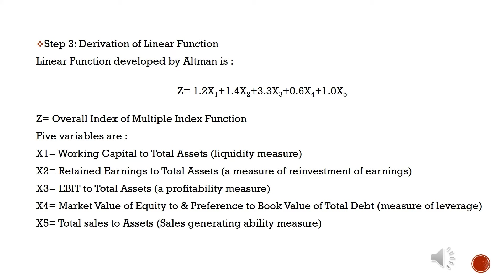Here Z stands for the overall index of the multiple discriminant function. The 5 variables are defined as follows: X1 is working capital to total assets, which is a measure of liquidity. X2 is retained earnings to total assets ratio, which measures the reinvestment of earnings. X3 is EBIT to total assets ratio, a profitability measure. X4 is market value of equity to book value of total debt, a measure of leverage. X5 is total sales to total assets, measuring sales generating ability.